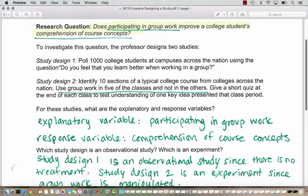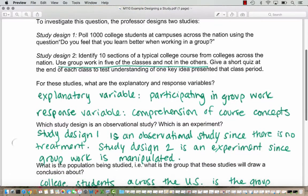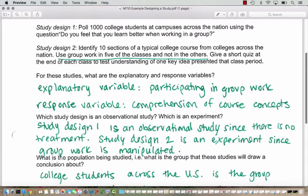Study design one is an observational study because they're polling students across the country. We hope they're using a random sample - they didn't tell us that. There's no treatment though. They're just asking students a question about their opinions based on their experience, but they're not manipulating those experiences.